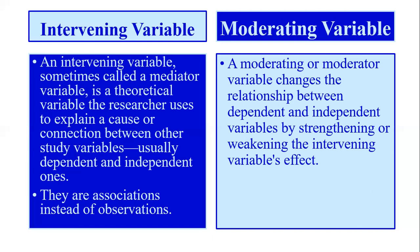The definition of moderating variable covers four things: first, the independent and dependent relationship; second, there is a moderator which changes the relationship between independent and dependent; third, it strengthens or weakens the effect of the intervening variable. When adding a moderator in your research, you need four things in your topic: independent variable, dependent variable, mediating or intervening variable, and moderating variable. The moderator is a practical term that changes the relationship and the strength of the intervening variable effect.